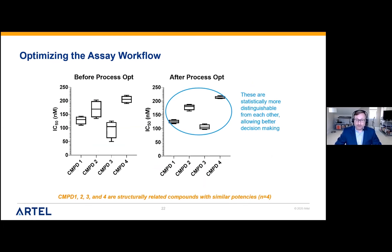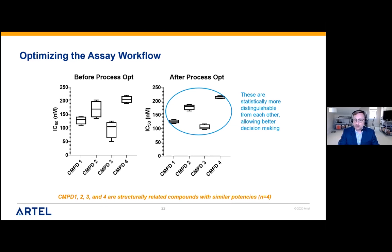Before process optimization, four structurally related compounds show a spread of potency values. By studying and optimizing the system using MVS and then applying biology, you're able to tighten those numbers. The potencies are about the same, but the variability is much improved. This allows better decision-making because you have more statistically relevant separation of your compounds. Whether you're in high-throughput screening or working with patient samples, the same concept applies — better data leads to better decisions.